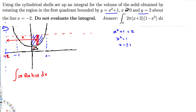The distance from x = -2 to the y-axis is 2 — distance is always positive, so the negative sign doesn't matter. The distance from the y-axis to the rectangle is x. Adding these together, the radius r = 2 + x.